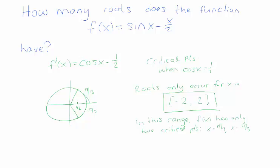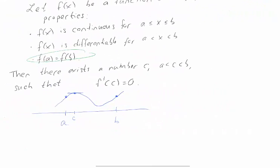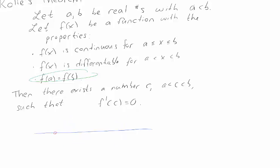This is helpful. We're going to use Rolle's Theorem, so let's verify its hypotheses are satisfied — our function is continuous and differentiable everywhere. Now, suppose we had four roots. Since the function is continuous and differentiable, Rolle's Theorem tells us there must be a critical point between each consecutive pair of roots. Four roots would force three critical points between them.